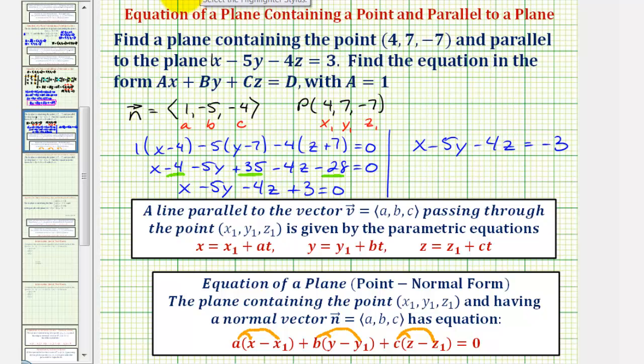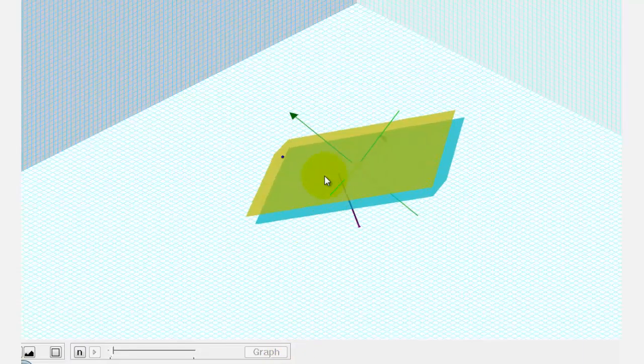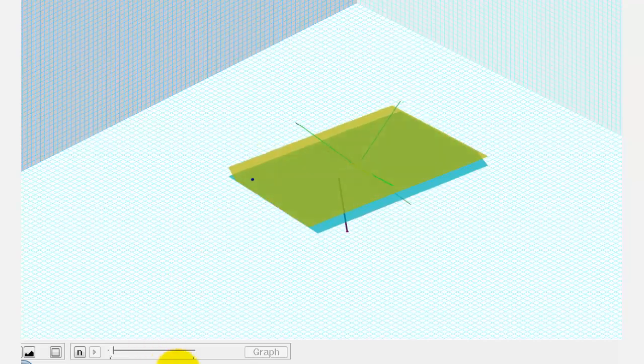This would be the equation of the plane that is parallel to the given plane and contains the point (4, 7, -7), which again would be the yellow plane pictured here, containing this blue point. I hope you found this helpful.